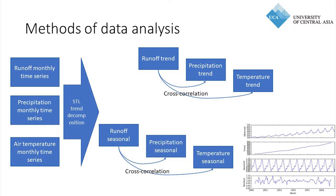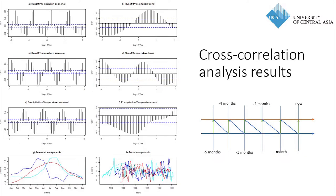We did cross-correlation analysis between runoff and these variables. Cross-correlation means correlating different variables across time lags — for example, if temperature increases today, runoff may increase tomorrow. When we correlate two variables at the same time point, the lag is zero; one month apart is lag one; two months apart is lag two. The charts show correlation coefficients at different lags.